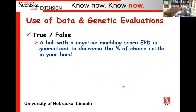True or false: a bull with a negative marbling score EPD is guaranteed to decrease the percentage of choice cattle in your herd. The answer is no. A negative EPD does not guarantee we're actually going to go in a negative direction—it's a comparative value. If the bull you're using right now is also negative, and is even more negative than this new bull, you would actually go in a positive direction. It's comparative to what we already have.